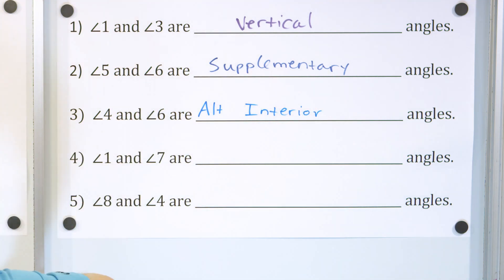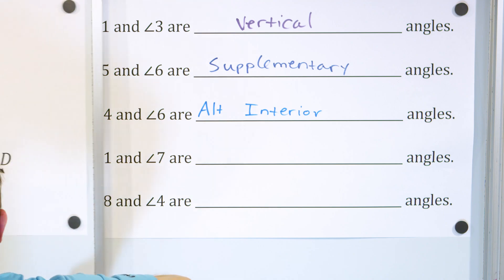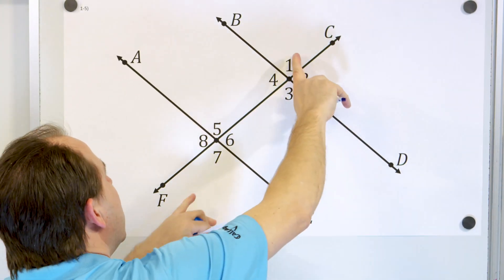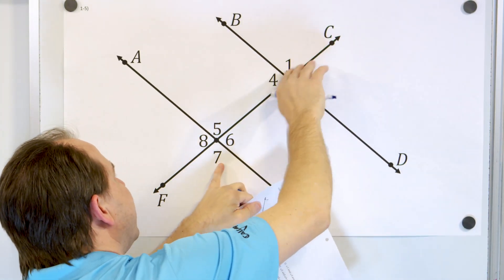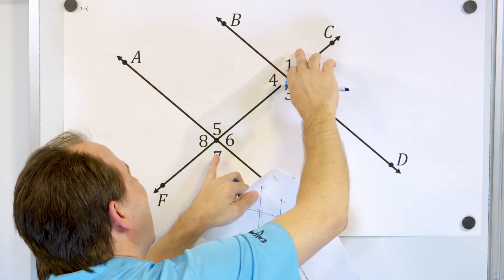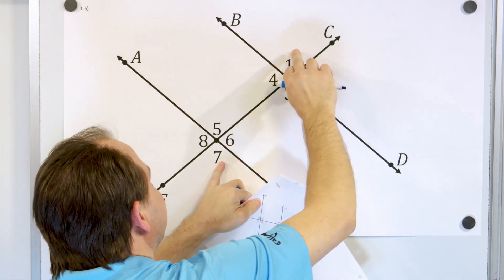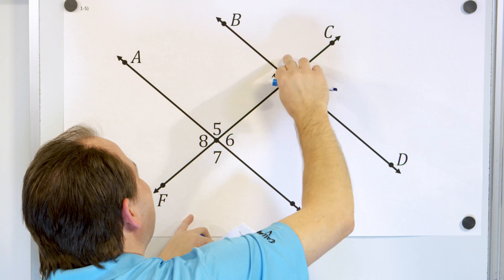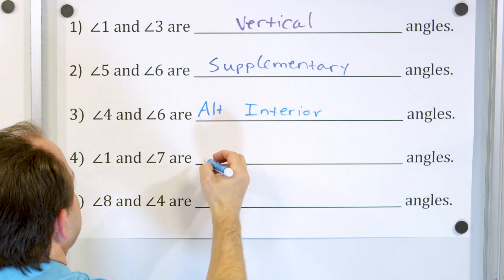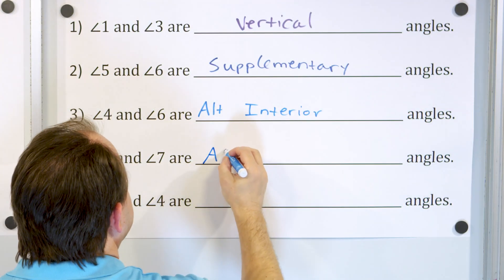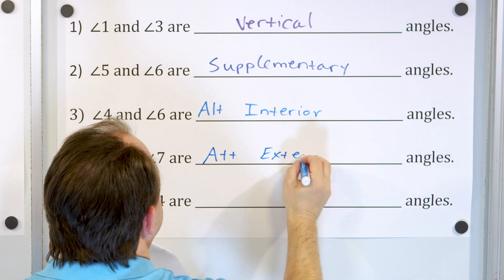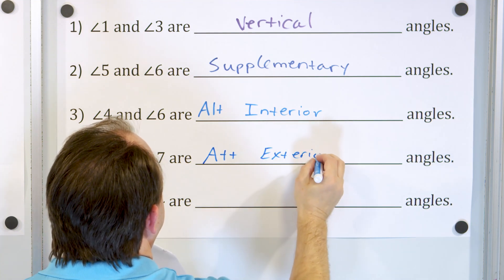Now let's look at angle one and angle seven. Angle one and angle seven are also alternate because they're on opposite sides of this line, but they're exterior angles, not interior. So they are called alternate exterior angles.